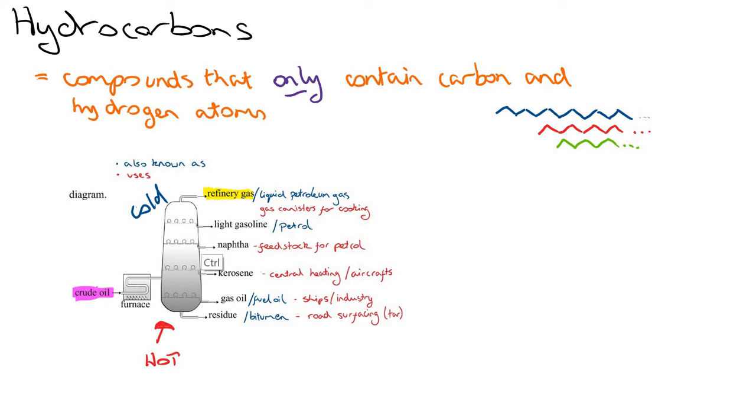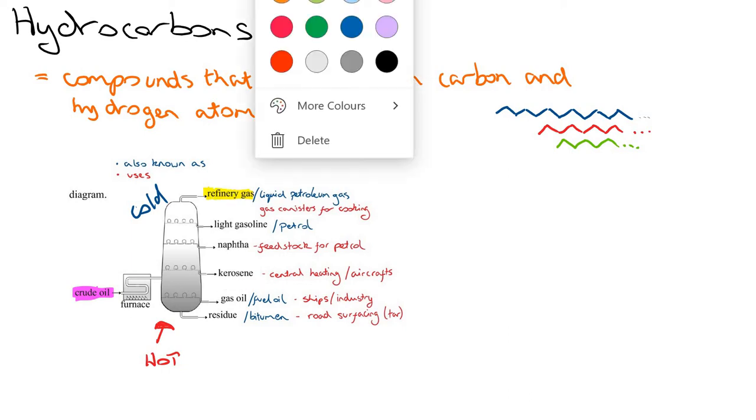The next fraction is gasoline, also known as petrol. That's what we use as a fuel. Next fraction here, which is a slightly longer chain again, is NAFTA.